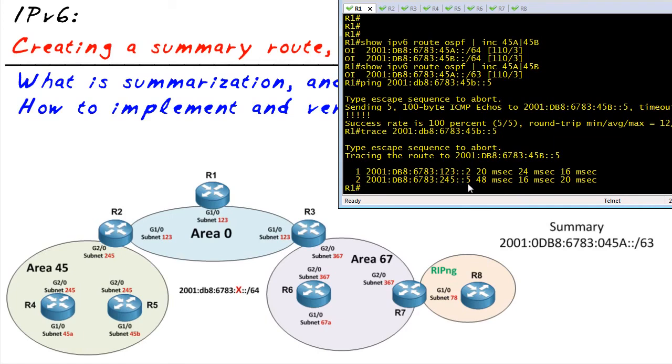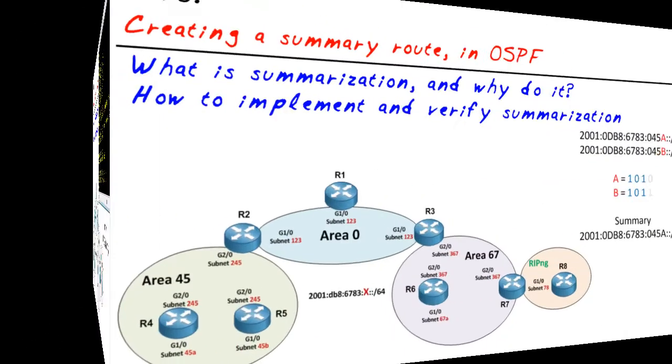The last number in the IPv6 host ID is reflecting the router number that owns that IP address.